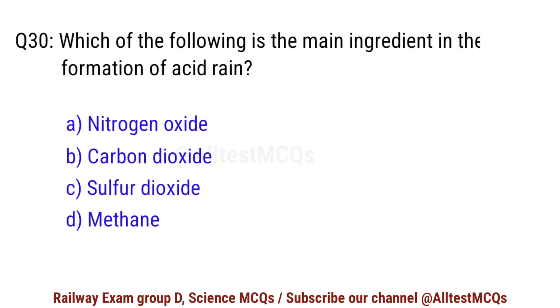Question No. 30. Which of the following is the main ingredient in the formation of acid rain? Correct option is C. Sulphur dioxide.